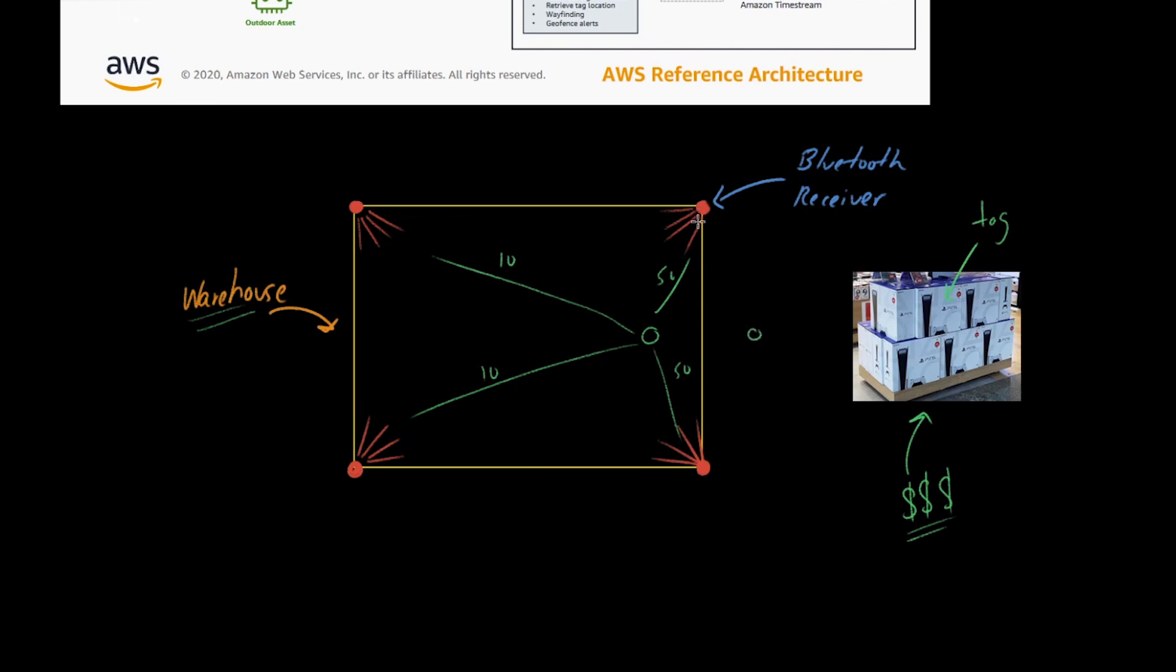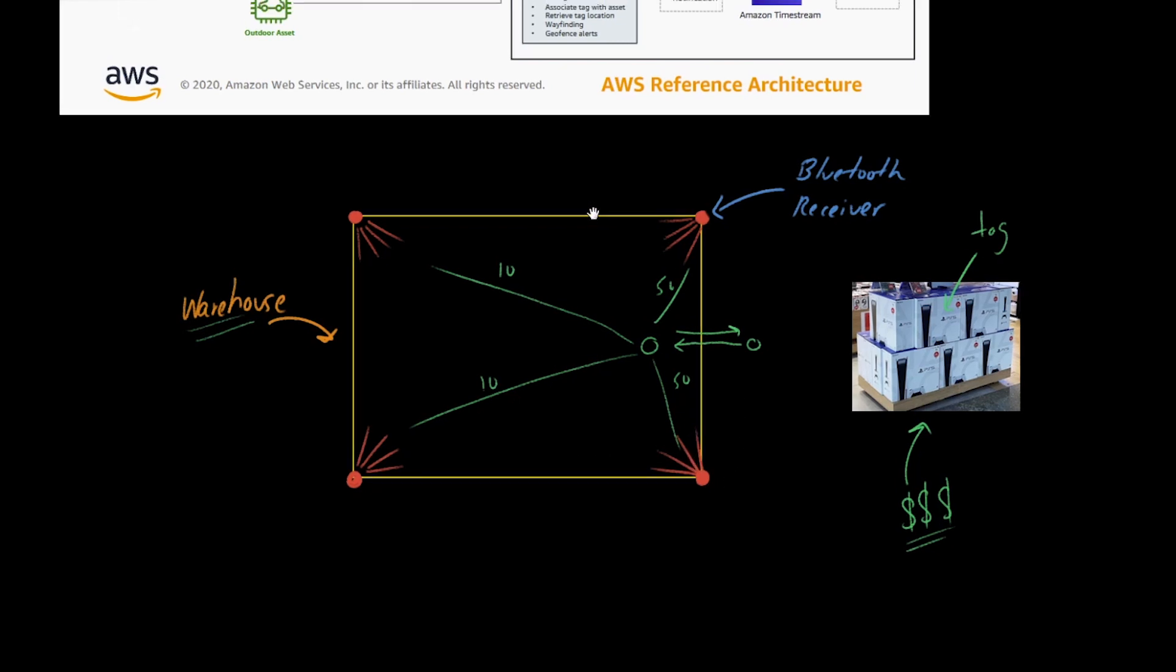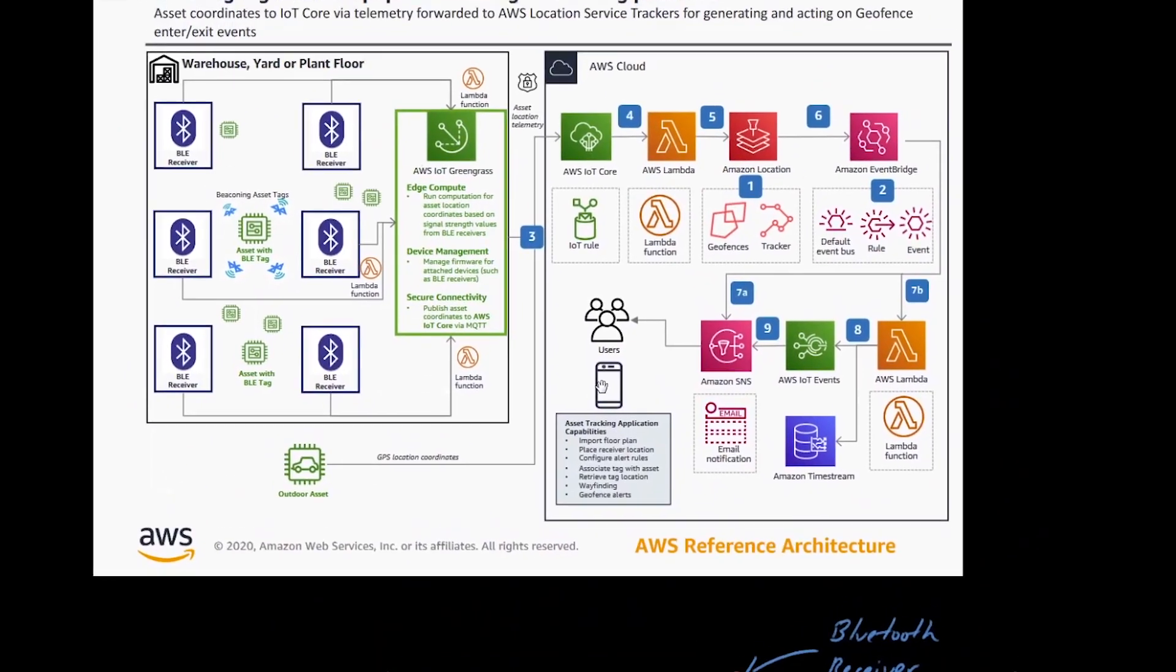In combination with this polygon that we've set up in Amazon Location, it's going to automatically fire events when we cross this threshold in either direction. So it's some pretty interesting technology. I hope this helped explain the example. Let's take a look at the architecture diagram to understand this a little bit more.